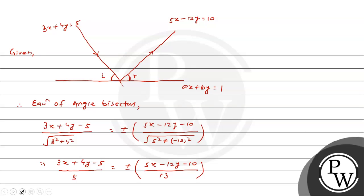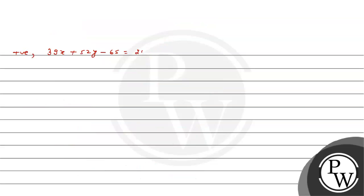Now cross multiply. Taking positive sign: 13(3x plus 4y minus 5) equal 5(5x minus 12y minus 10). This gives 39x plus 52y minus 65 equal 25x minus 60y minus 50.